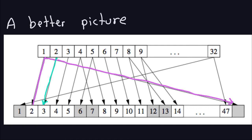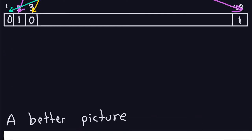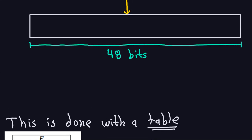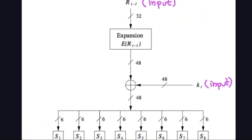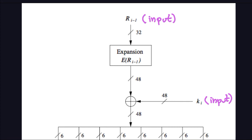Why do we need a 48-bit block? Because we want to XOR it with the key Ki, which is always a 48-bit block. To do a bitwise XOR, both operands must be the same length. That is why the 32-bit right-hand side must be expanded to 48 bits via the expansion permutation — so it can be XORed with the 48-bit sub-key. The expansion permutation is essentially a lookup table that tells you how to transform a 32-bit block into a 48-bit block.